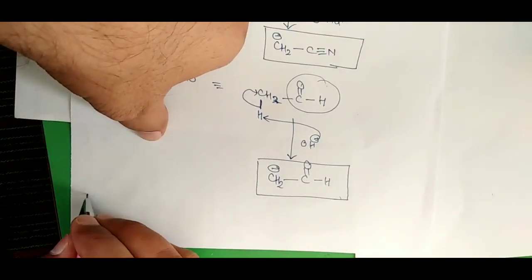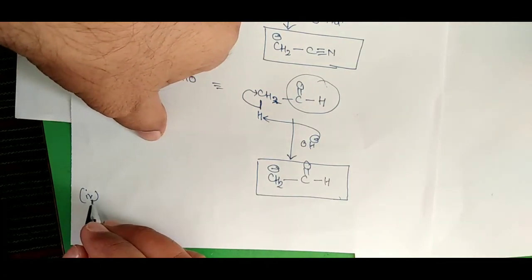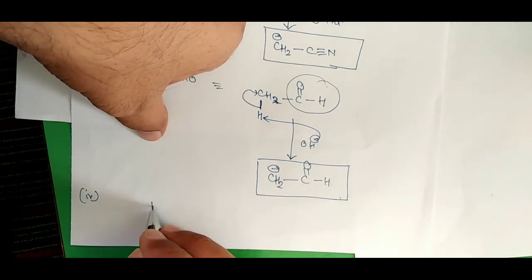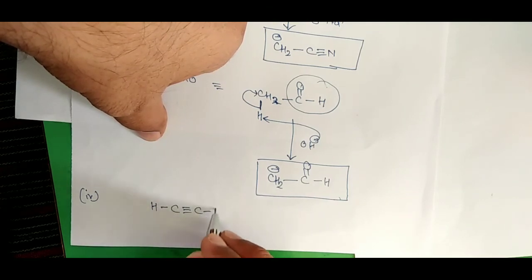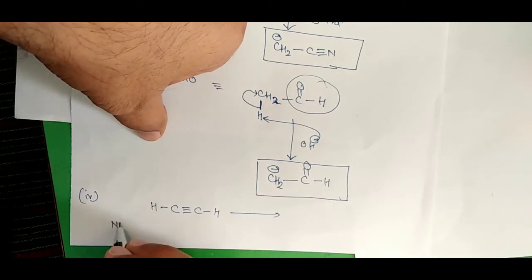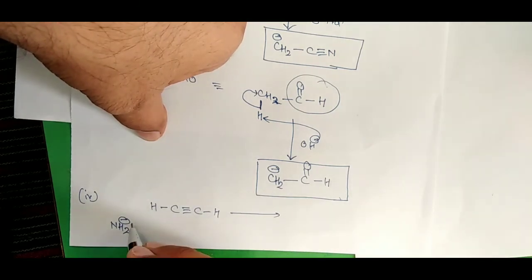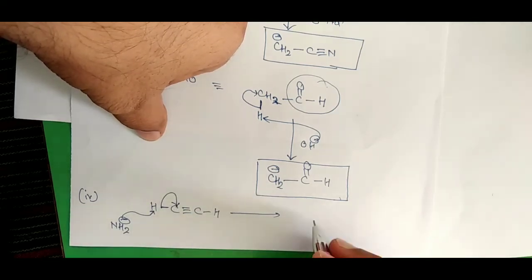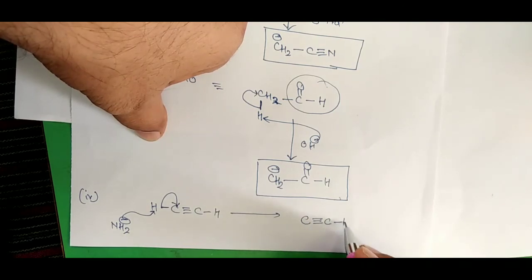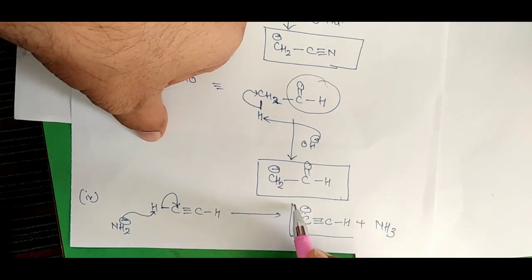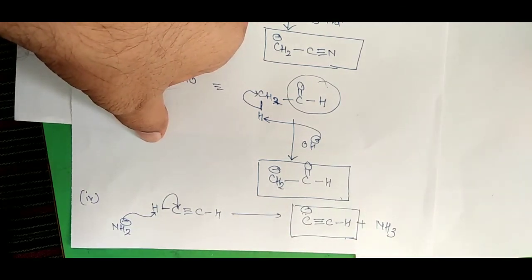The fourth method of preparation is by abstraction of hydrogen from a terminal alkyne with a strong base. If we have acetylene with C triple bond CH and we add the base amide ion NH2⁻, it will abstract the proton from here and donate electron density to the carbon. We get C triple bond C with the carbon carrying a negative charge, along with NH3. This is the fourth method of preparation of carbanion.